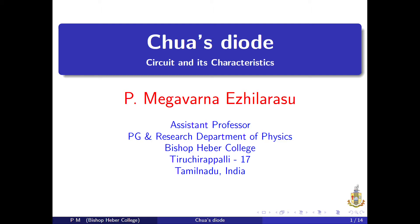In electronics and circuit theory, Chua's Diode is a type of two-terminal nonlinear active resistor which can be described with piecewise linear equations. It is an essential part of Chua's circuit, a simple electronic oscillator circuit which exhibits chaotic oscillations and is widely used as an example for a chaotic system. It is implemented as a voltage-controlled nonlinear negative resistor. The diode is not sold commercially and is usually built from standard circuit components such as resistors and operational amplifiers. There are many ways to simulate Chua's Diode using such components.